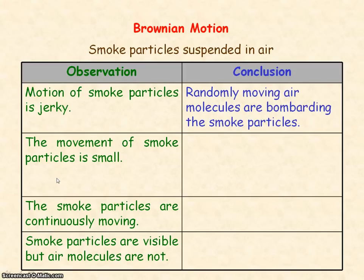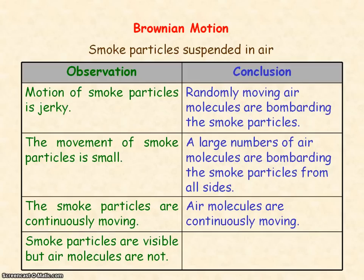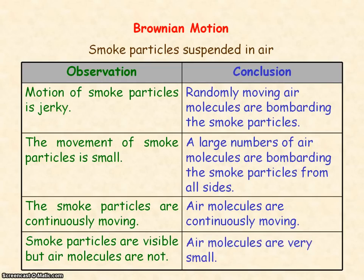We also observe a small net movement of the smoke particles because a large number of air molecules are bombarding the smoke particles from all sides. Another observation is that the smoke particles are continuously moving, because the air molecules are continuously moving and continuously bombarding the smoke particles. Finally, we can see the smoke particles under the microscope but not the air molecules, implying that the air molecules are too small to be seen.